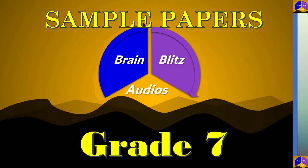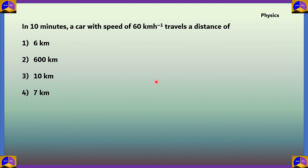First question from physics: In 10 minutes, a car with a speed of 60 kilometer hour raised to minus 1 travels a distance of — option 1: 6 km, option 2: 600 km, option 3: 10 km, and option 4: 7 km. Let's understand the question.